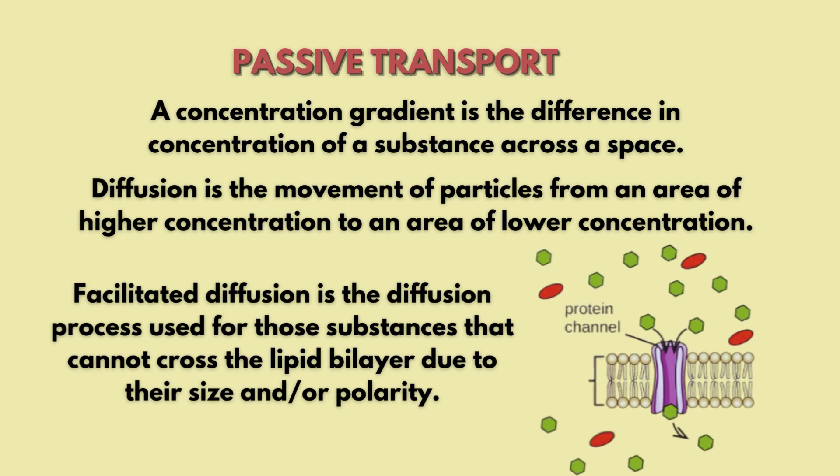Next is facilitated diffusion. In this process, particles or substances of large size or polarity cannot pass directly through the cell membrane. Instead, they move from higher to lower concentration with the help of certain proteins — specifically channel proteins. For example, the movement of glucose into the cell is assisted by glucose transporters, which are channel proteins.